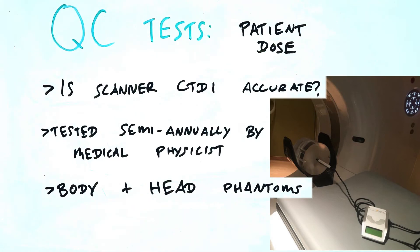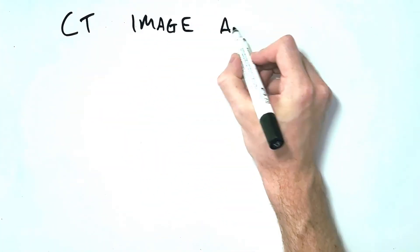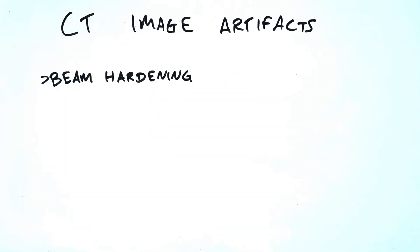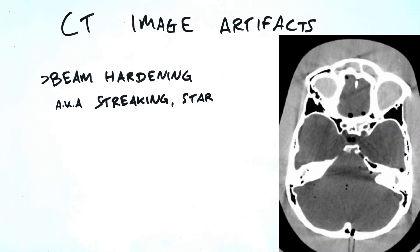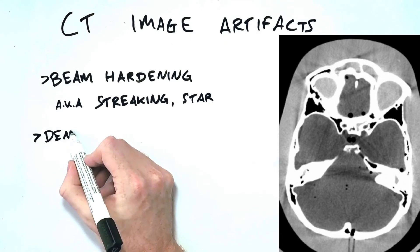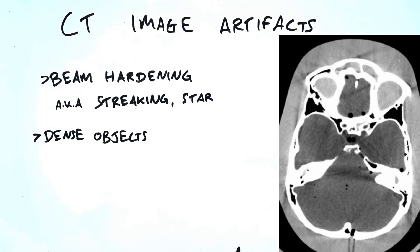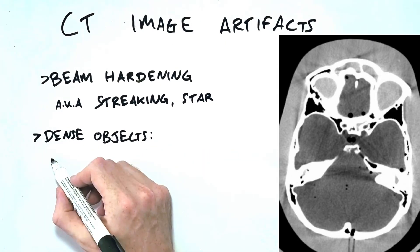We'll finish with a quick-fire round of a few artefacts you may see in CT images. Beam hardening artefact is the result of a disproportionate amount of x-ray photons being absorbed by a dense structure within the patient, for example a metal implant, or the thick bones of the petrous ridges. The result is a streaking or a star pattern with both dark and bright areas.